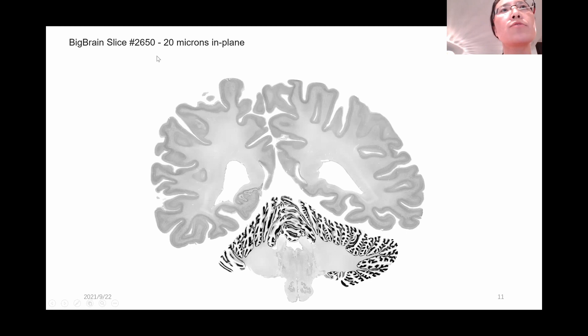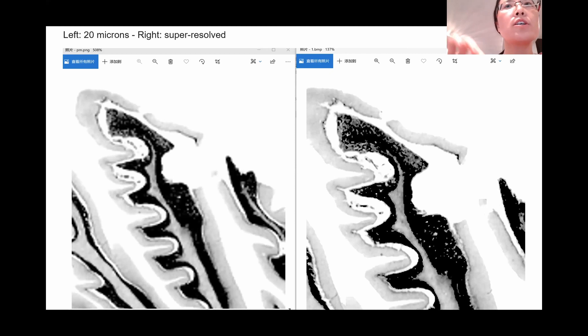Then the model we apply into the BigBrain slice to 650 and 20 micron images. It's challenging to do image processing with the texture or smooth parts. Here are some kind of results. The left is the original image after five times zoom in.